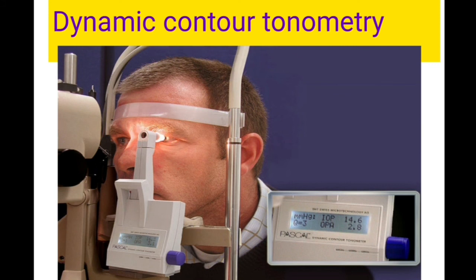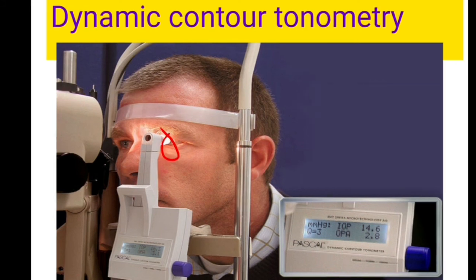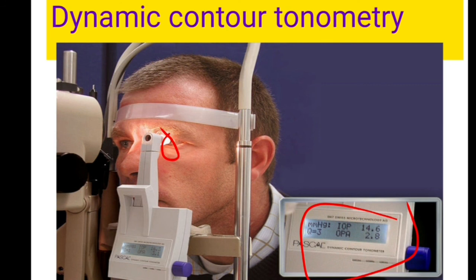Dynamic contour tonometry (Pascal tonometry) has a different principle compared to applanation and indentation tonometry. The principle is: by surrounding and matching the contour of a sphere, the pressure on the outside equals the pressure on the inside. The tip of the probe matches the contour of the cornea, and the pressure transducer built into the center of the probe measures the outside pressure, which equals the intraocular pressure inside the eyeball. The IOP is displayed on an LCD. This is a promising new technology that may give better information about actual IOP and is independent of corneal thickness and contour — the main advantage. It may give readings as accurate as Goldman's tonometry.